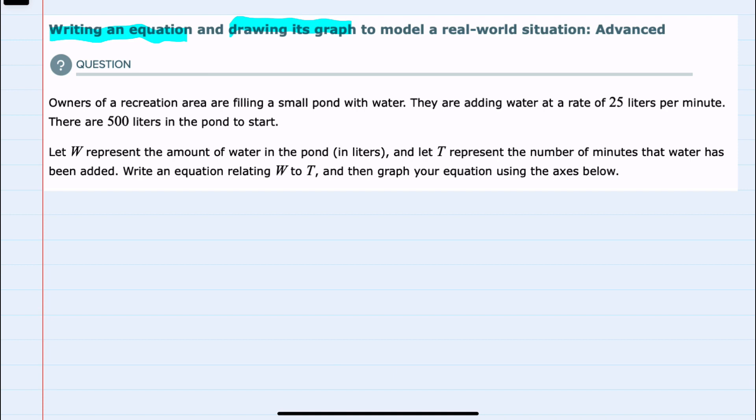Looking at this problem we're told that owners of a recreation area are filling a small pond with water. They're adding water at a rate of 25 liters per minute. And when we see a rate we should be reminded that that will be the slope of the line.